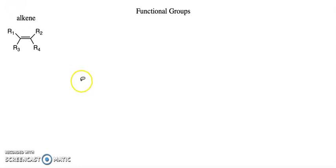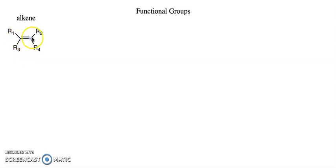Today I want to talk about some common functional groups encountered in organic chemistry. Starting with alkenes, which are simply molecules with double bonds. There are four possible different substituents on the double bond — four places coming off the alkene. They can be hydrogens, carbons, halogens, or pretty much anything.